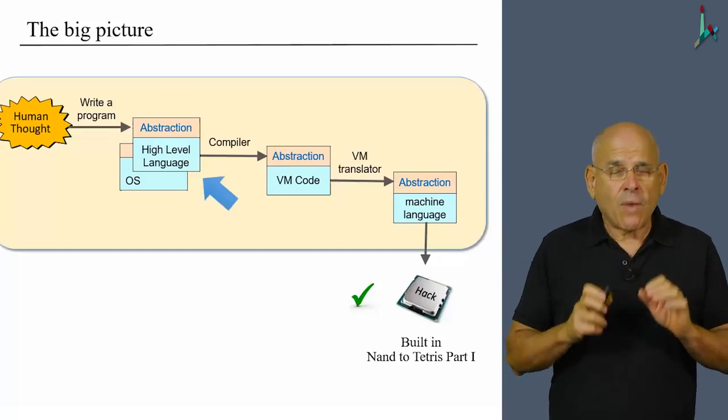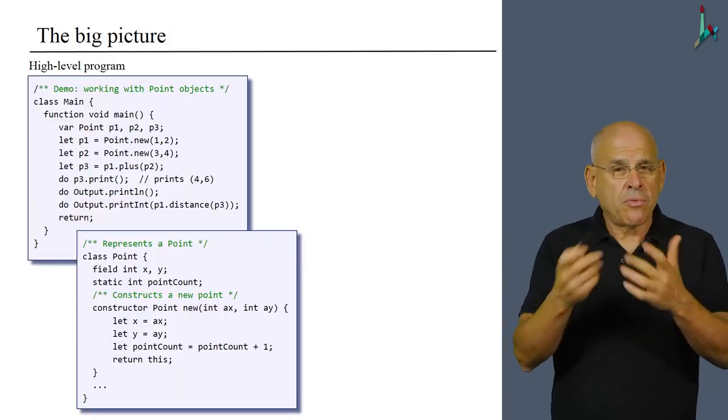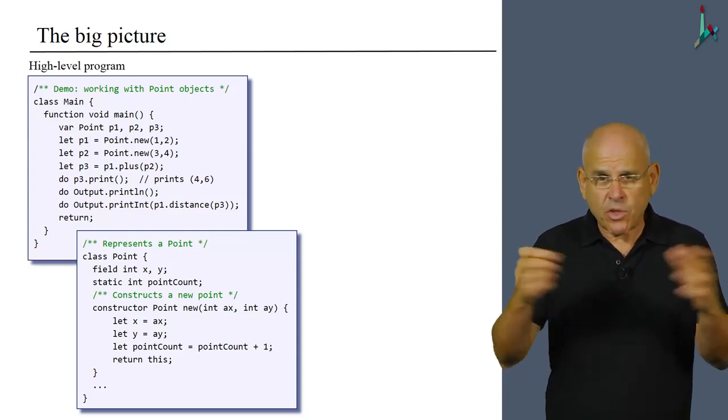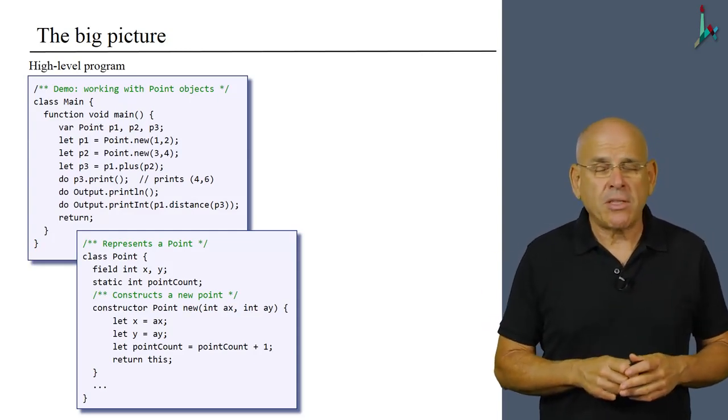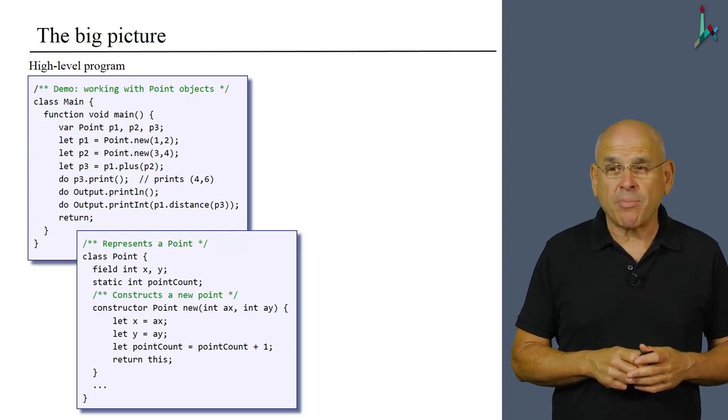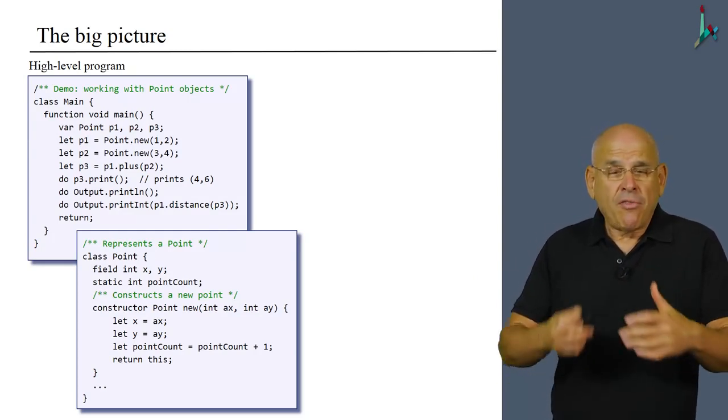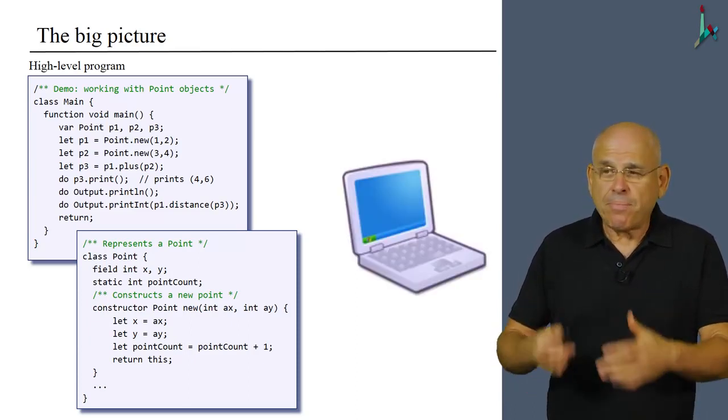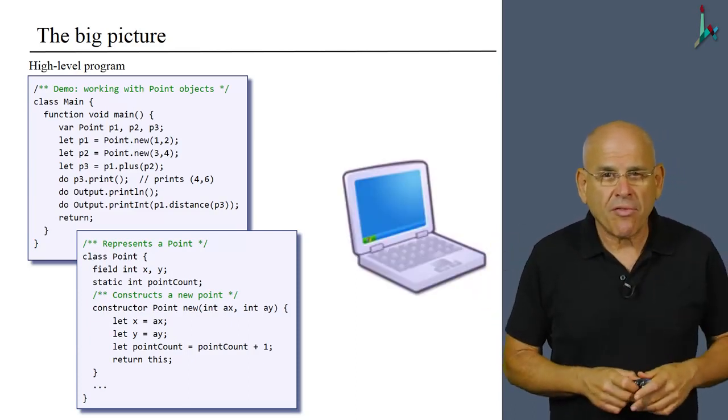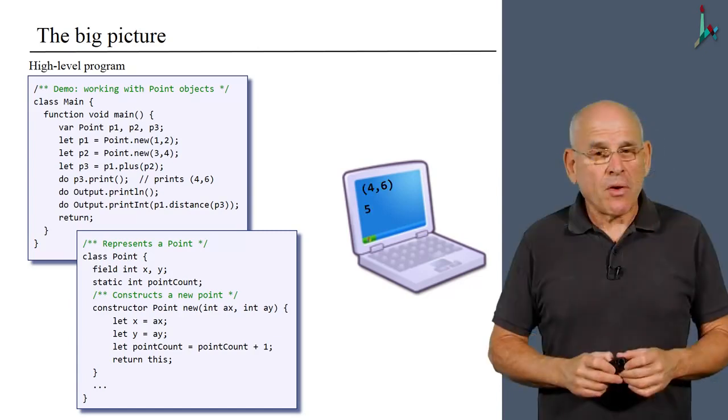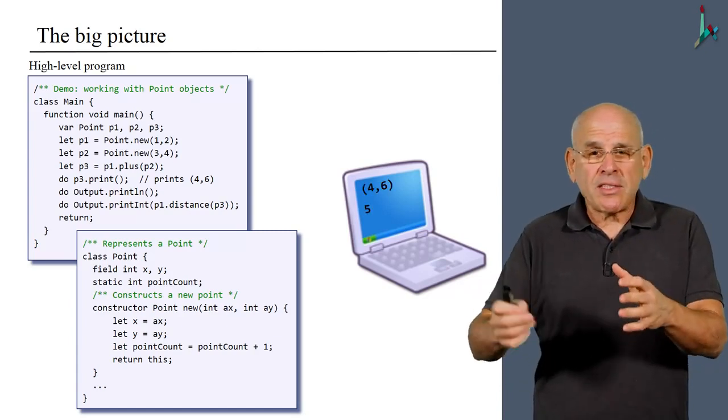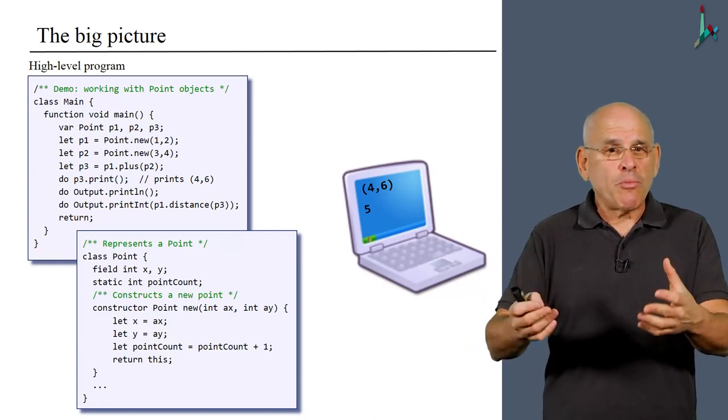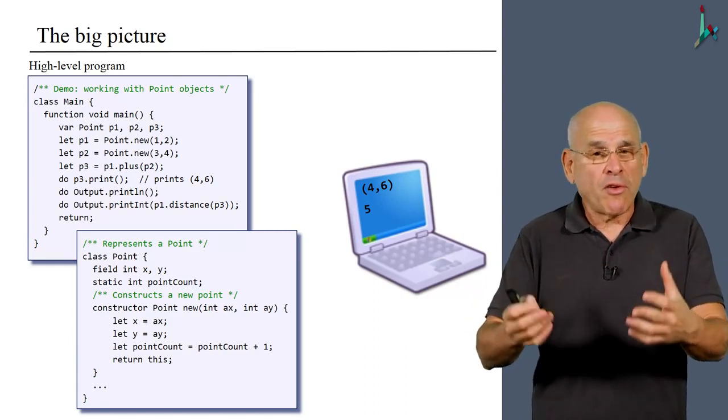So let us once again review the code that we saw before in the previous unit, in which we manipulate some points in a two-dimensional space. I wish to remind you that if you run this code on a computer, you'll end up seeing some output flickering on the screen. No, this is not just a bunch of characters. These are points that were derived using vector algebra and the Pythagorean theorem.